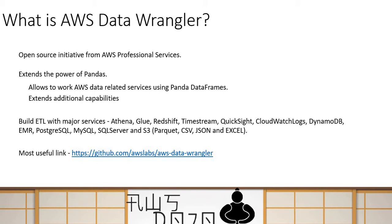In a very simple summary, AWS Data Wrangler is a Python package which uses Pandas DataFrames as a way to fetch data from AWS services. It also provides a way to write Pandas DataFrame data back to AWS services, and it adds some additional capabilities to enhance the type of operations you can perform on AWS services.